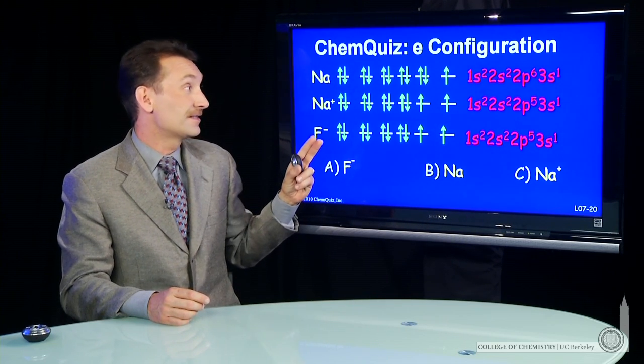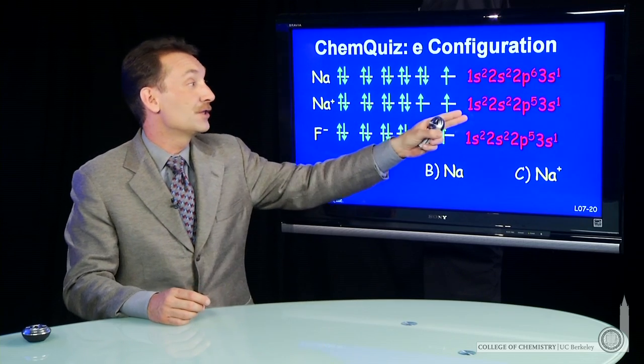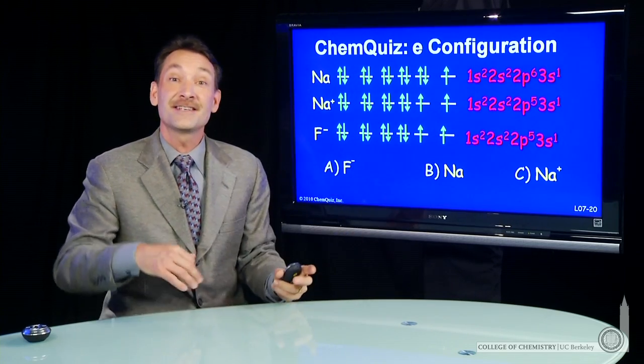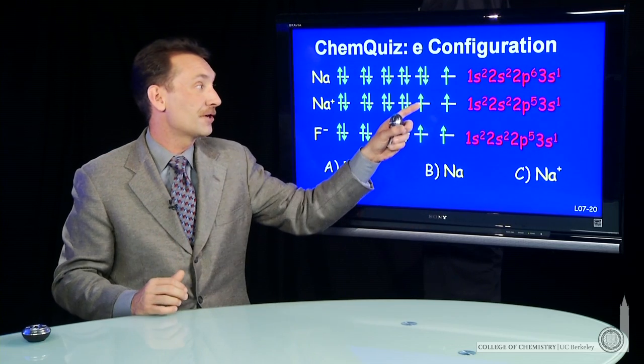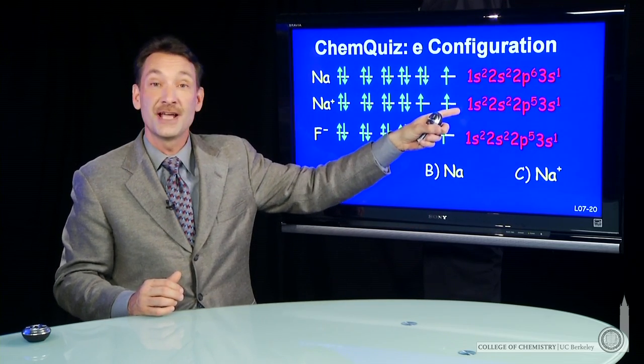Sodium plus has one fewer electron, so it's a 10-electron system. And if it's in the 1s2, 2s2, 2p5, 3s1 state, that's a slightly excited state. An electron's been promoted from 2p to 3s.